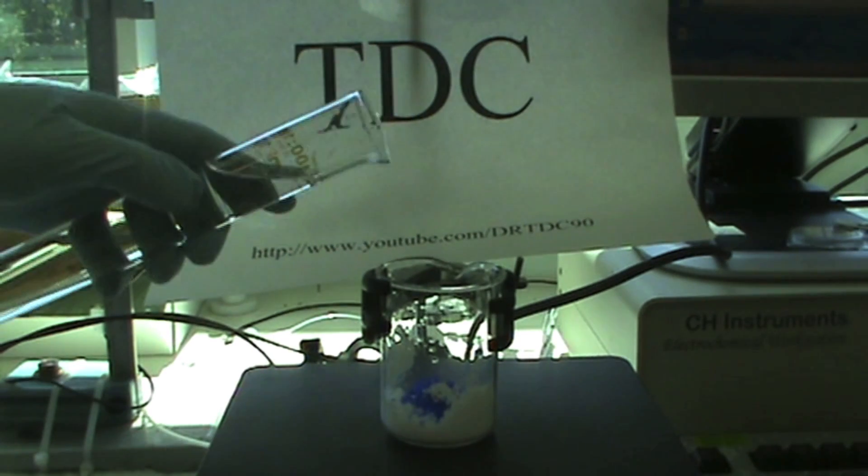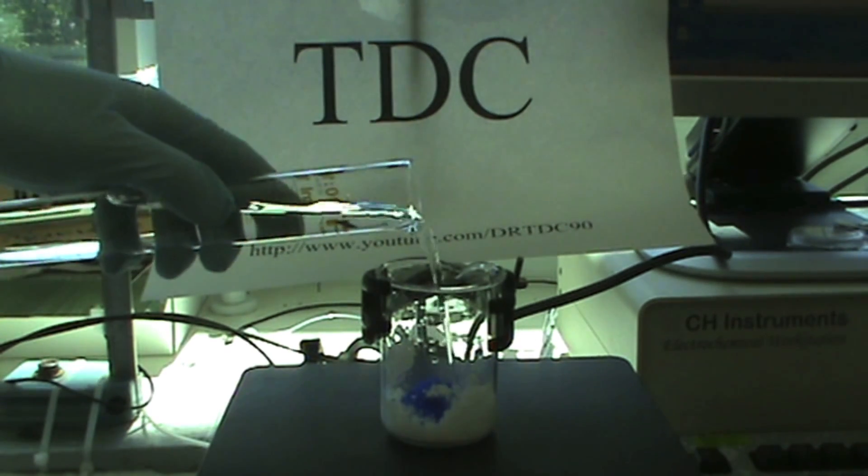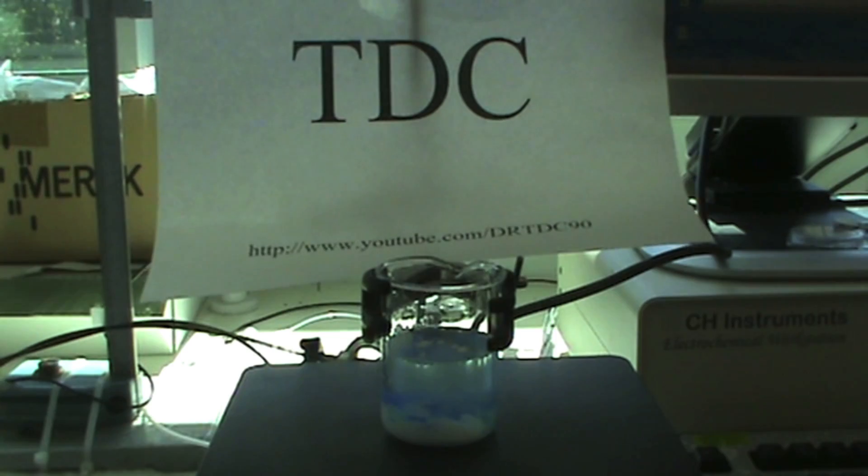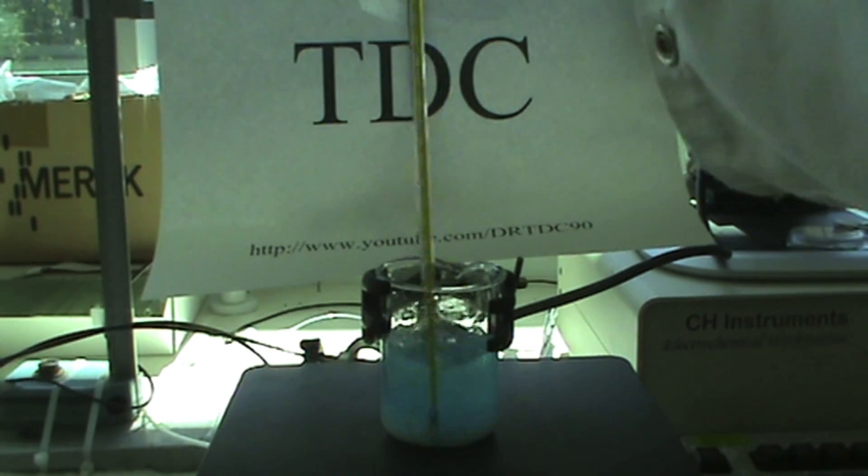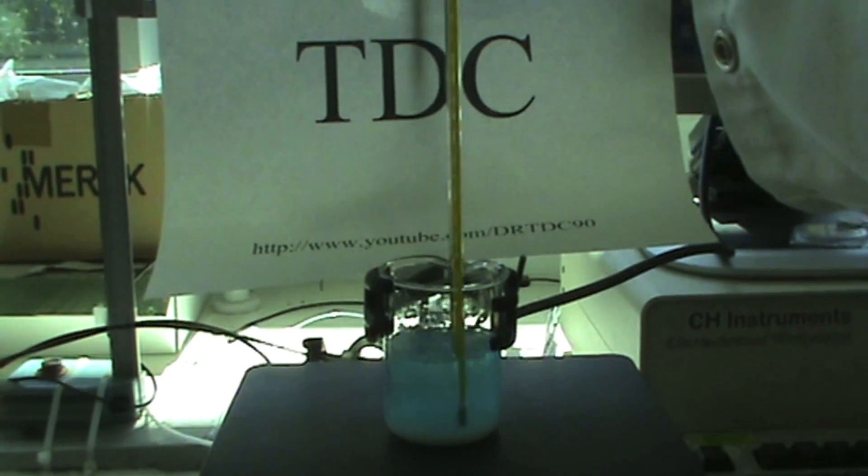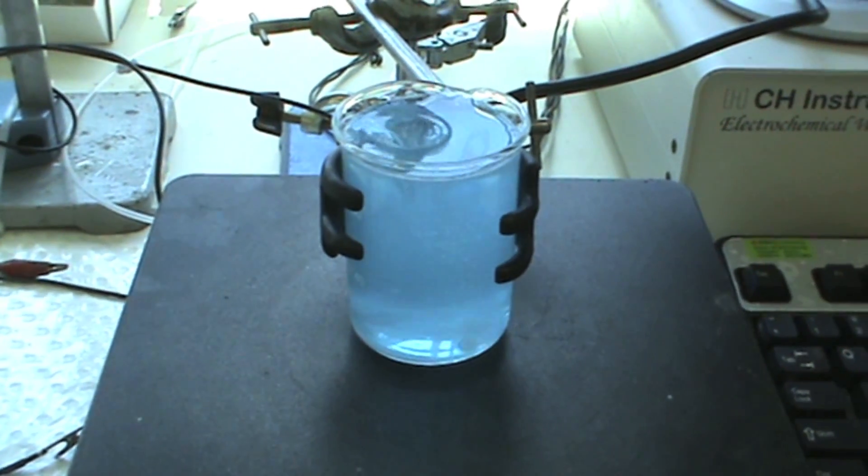To the mixture, add about 50ml of millicule water and stir. Next, turn the hot plate on. Note, it will take a while for the chemicals to dissolve, so add another 50ml of millicule water and a stir bar in the beaker.